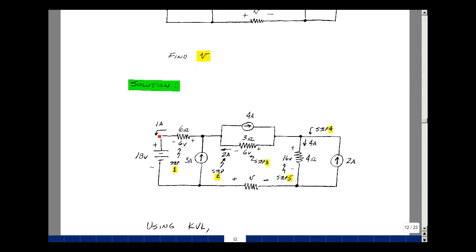I was given the current flowing into this 18-volt battery as 1 amp, but that means that in this 6-ohm resistor, I also have 1 amp, and so I have 6 volts across here. That's my first step.